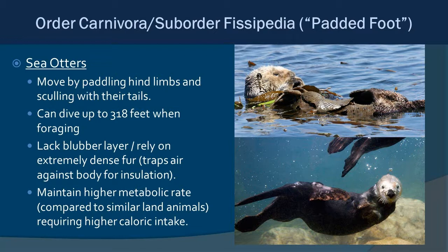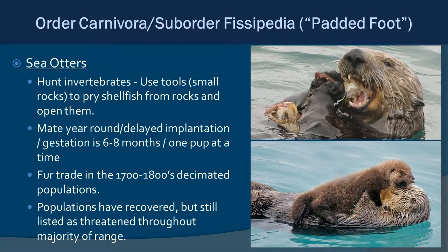Being one of the smaller marine mammals, sea otters have a lot of surface area for heat to radiate from. They spend much of their time hunting invertebrates and are one of the most documented tool users in the animal kingdom — they use rocks to pry open shellfish and crack sea urchins. They mate year-round but undergo delayed implantation, where the embryo doesn't implant until the animal is ready to begin gestation. Gestation takes six to eight months, and they generally have one pup at a time.